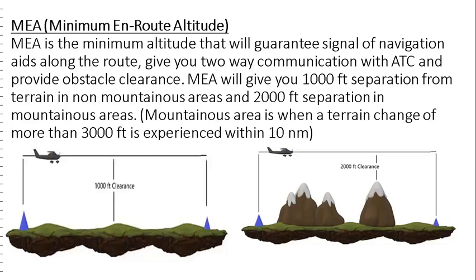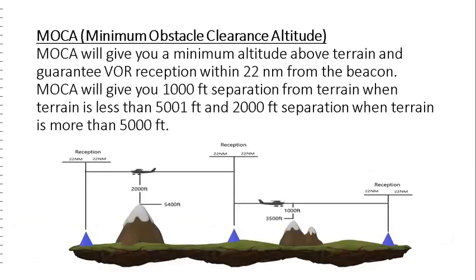Minimum Obstacle Clearance Altitude will give you a minimum altitude above terrain and guarantee VOR reception within 22 nautical miles from the beacon. Minimum Obstacle Clearance Altitude will give you 1,000 feet separation from terrain when terrain is less than 5,001 feet, and 2,000 feet separation when terrain is more than 5,000 feet.